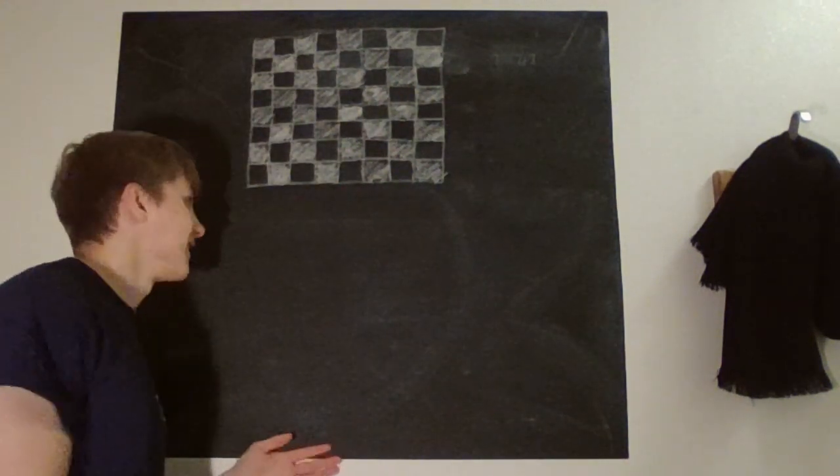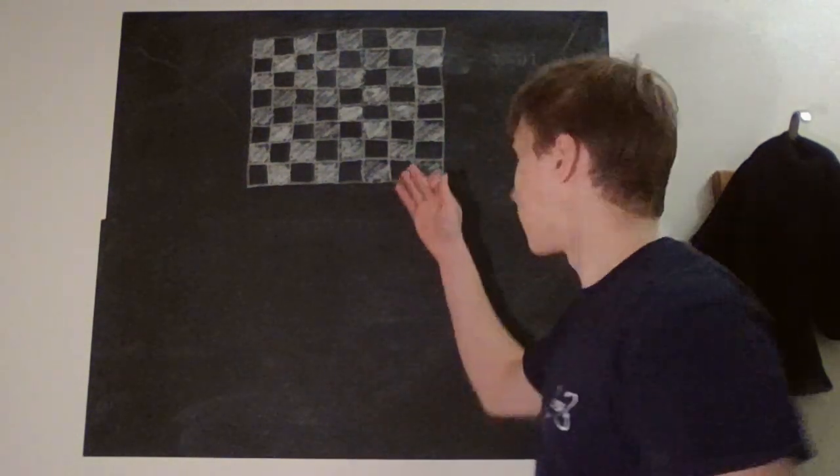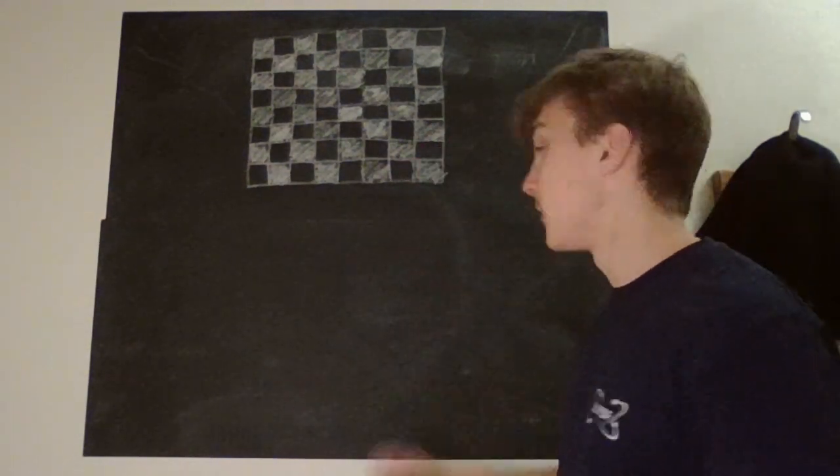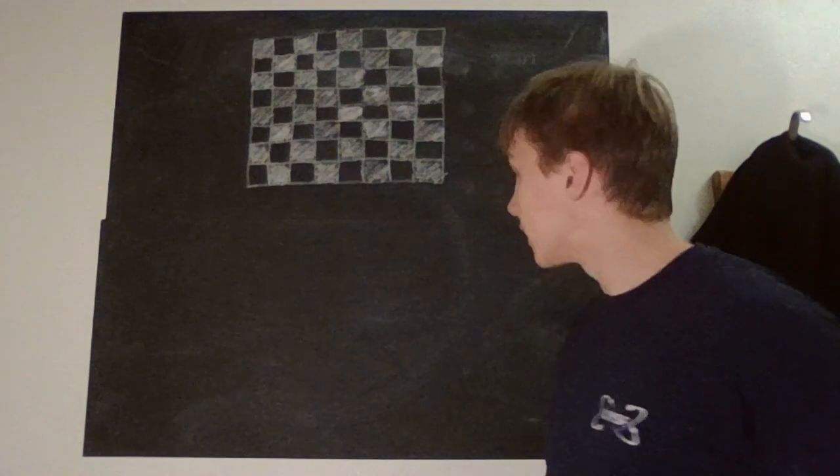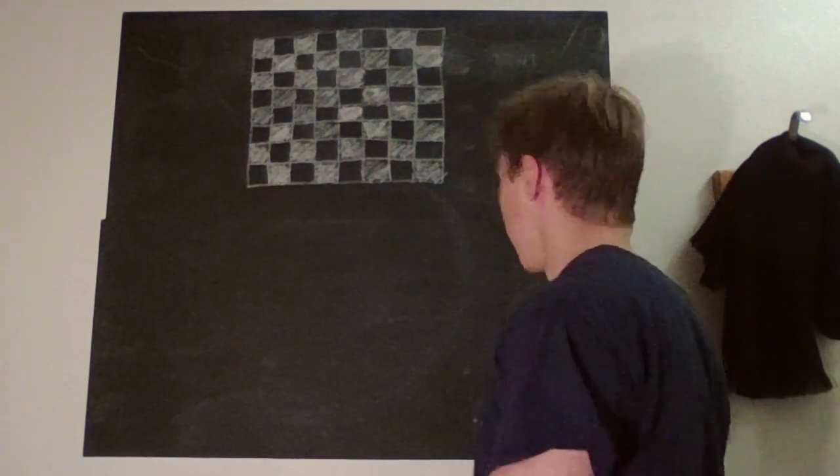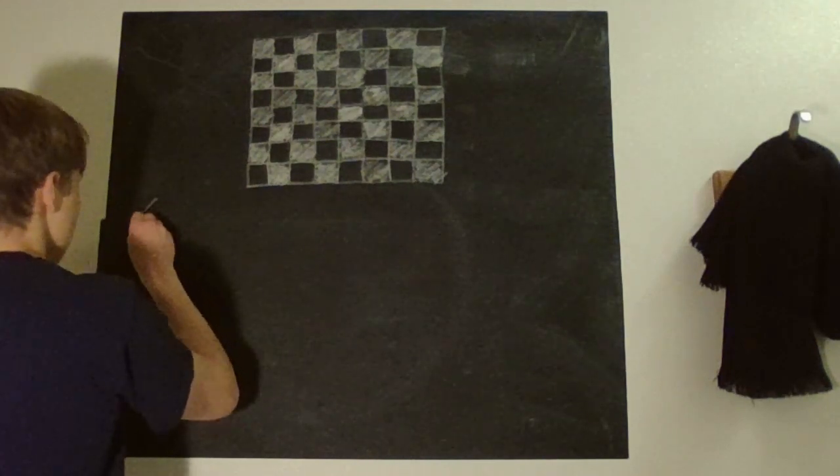Okay, let's just start with the simplest case. We'll just count the one by one squares, which is literally the squares you see here. And how many of those are there? 64. There are 64 one by one squares.